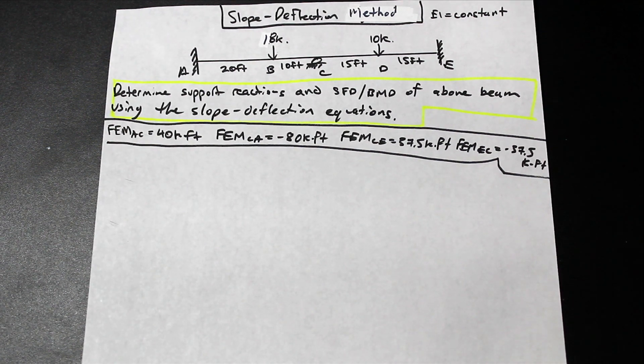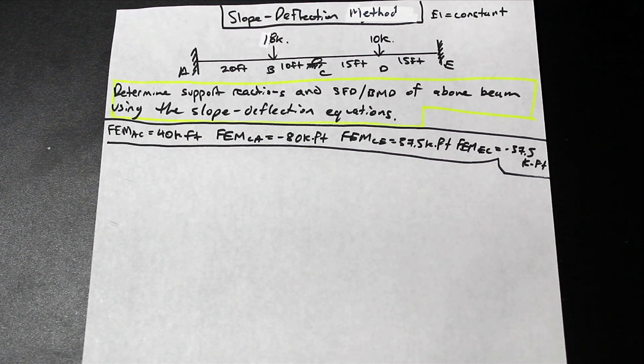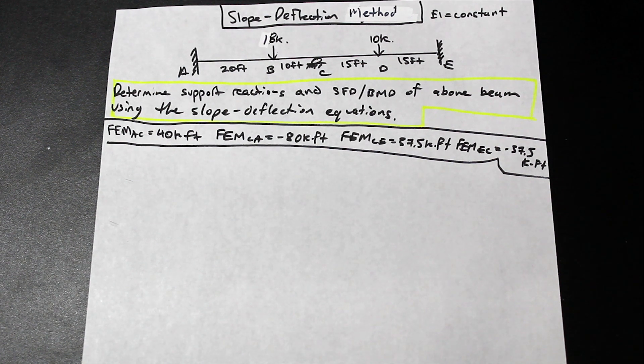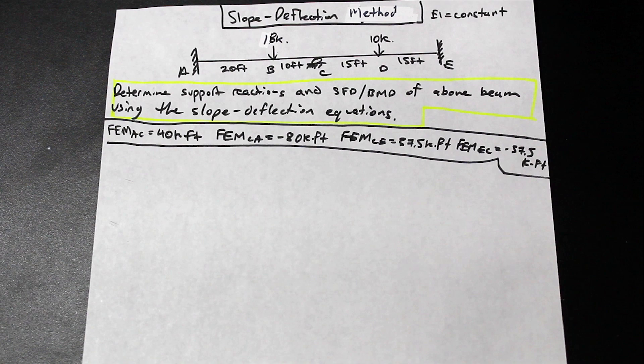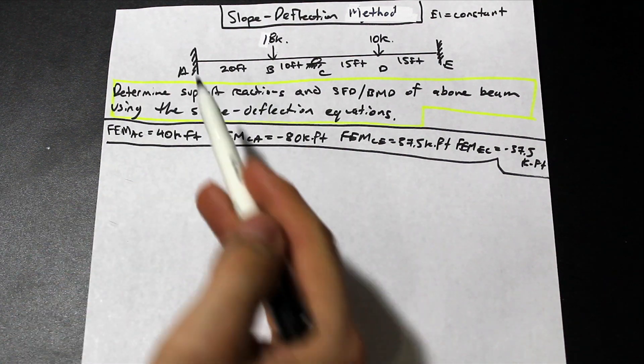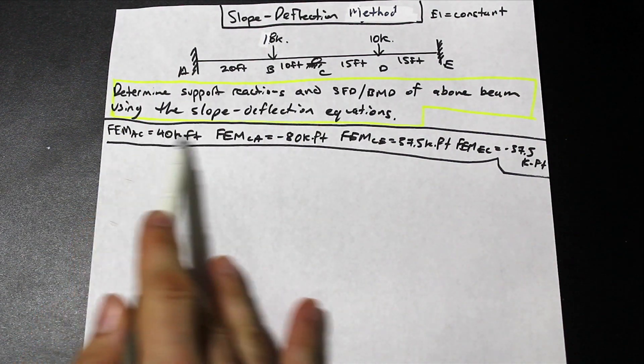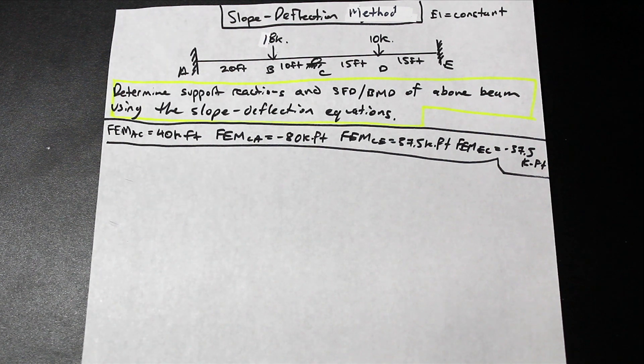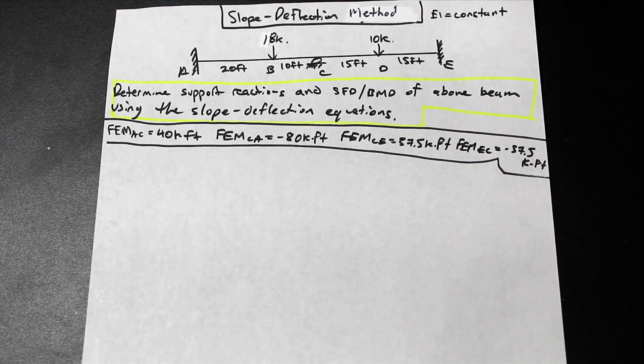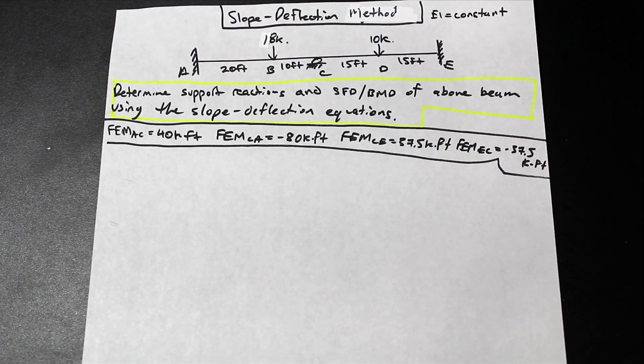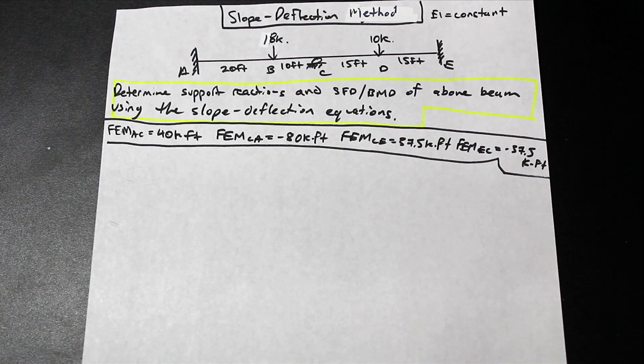And then in another video, we're going to introduce to you a nice little trick where you use the modified slope deflection equations. For this one, we're just going to do the regular ones. Actually, the first step in any slope deflection method question is to find the fixed-end moments, but we did that in a previous video, so if you want to go ahead and figure out how we got these values, the link will be down below in the description and in the comments. All right, so let's get started.